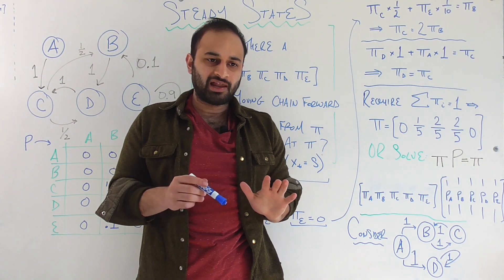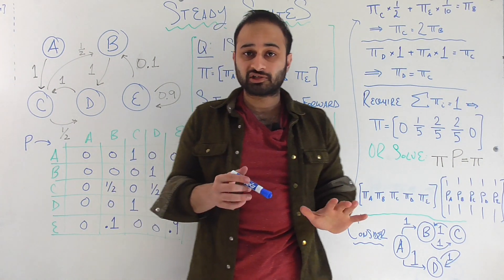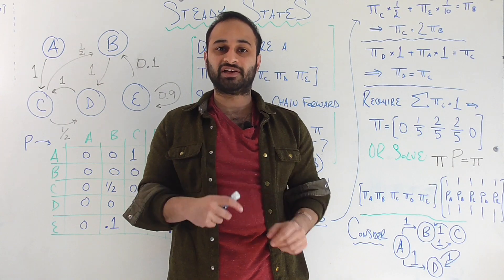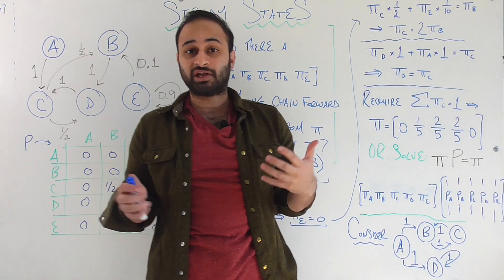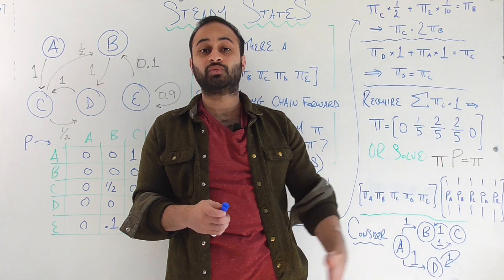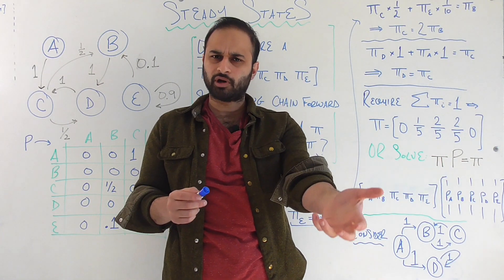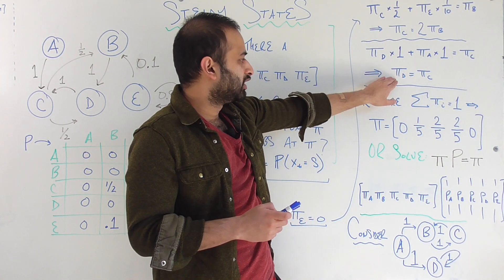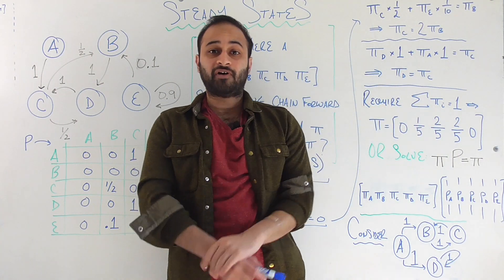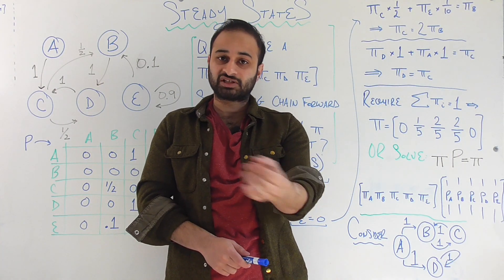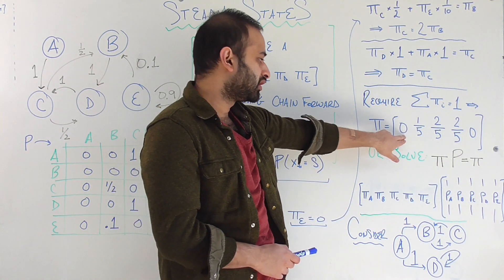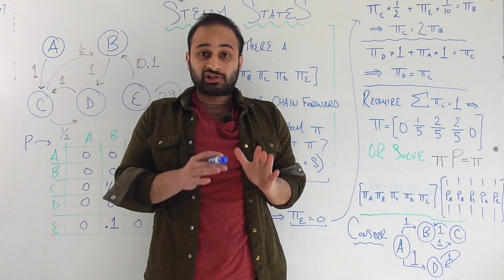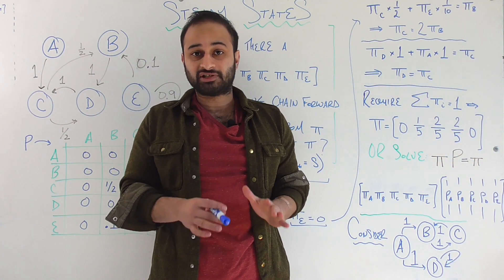Although the math we did is not super high level, I do think it helps to pause, look at the Markov chain, look back at the equations, and make sure everything is connecting. We actually have all the information we need to solve for these variables, because we have this hidden third equation that all of the pi's need to add up to one. Taking all the equations together, the only pi vector that satisfies all these conditions is zero, one-fifth, two-fifths, two-fifths, and zero. Now we've solved it mathematically.